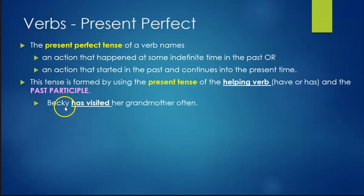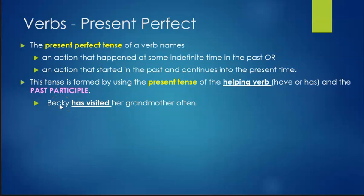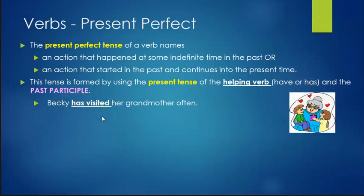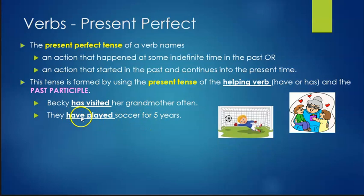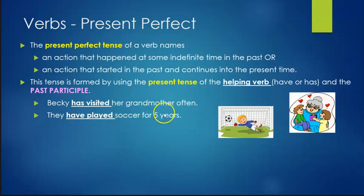For example, 'Becky has visited her grandmother often.' This is present perfect of visit. We use the present tense of the helping verb has — Becky is third person singular, we would replace her with the pronoun she, so has is correct. The past participle of visit is visited with the -ed on the end. Another example: 'They have played soccer for five years.' They is plural, so have is correct, and played with -ed is the past participle.